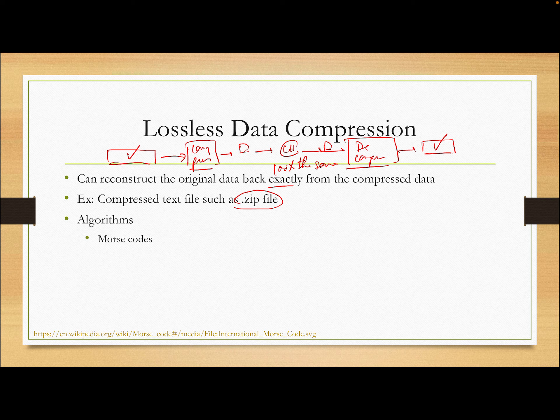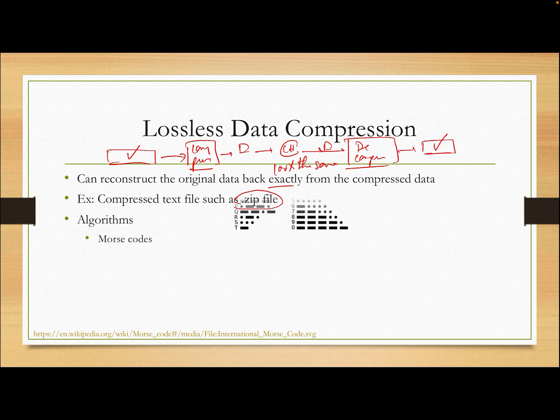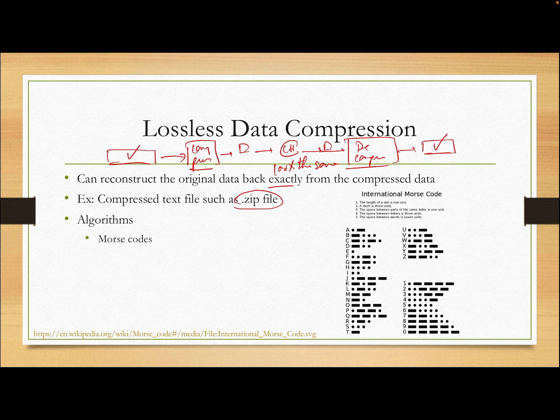Now there are two types of data compression, lossless and lossy data compression. For the lossless data compression, the receiver can reconstruct the original data back exactly. So 100% the same from the compressed data. So if you have the original data, so you compress it, so it becomes smaller. You send it to the channel and you may have modulator, demodulator, whatever. And then you could decompress it, decompress. And the receiver, you will get the same. This and this, they are the same. So you can reconstruct exactly the original data back.